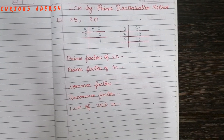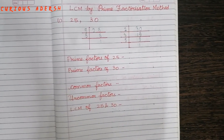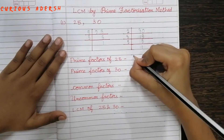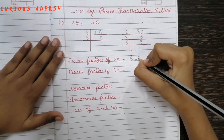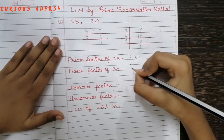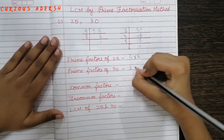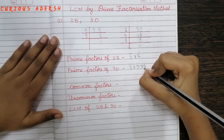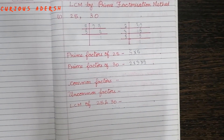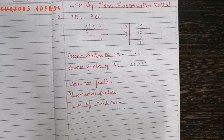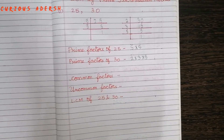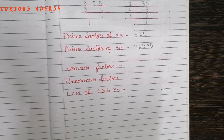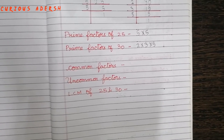Now let's write down the prime factors of 25 and 30: 5 times 5, and 2 times 3 times 5. Now let's write down the common and the uncommon factors. Common factors are the factors which have a partner.